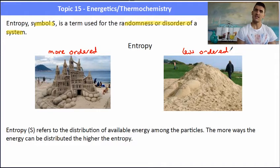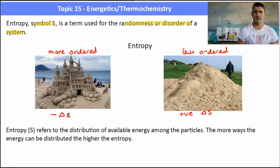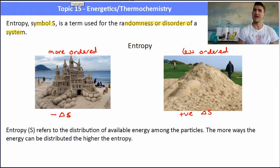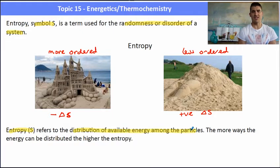The way you can think of this is: on the left, with the sandcastle that looks amazing, there's really only one way I can put all of the bits of sand together. On the right, there are many different ways that I could arrange those bits of sand and still get it looking the same way. A more ordered system has a negative delta S, and a less ordered system has a positive delta S. Entropy refers to the distribution of available energy amongst the particles, and the more ways you can distribute that energy, the higher the entropy.